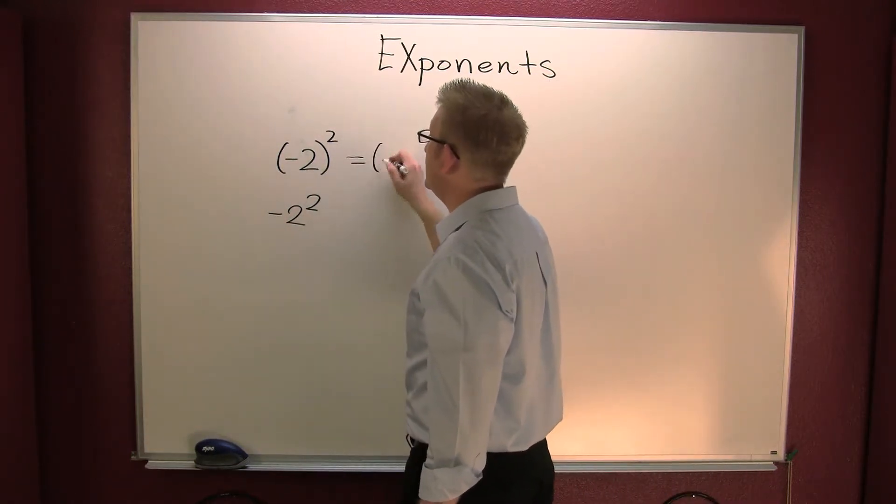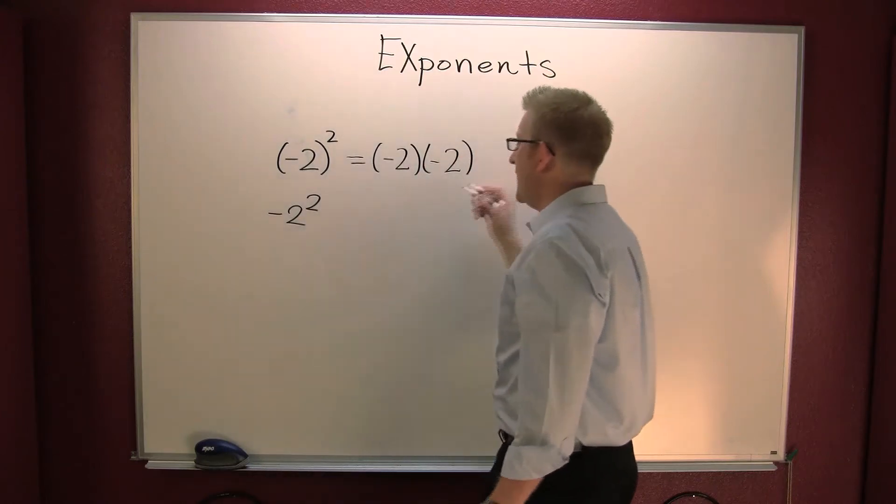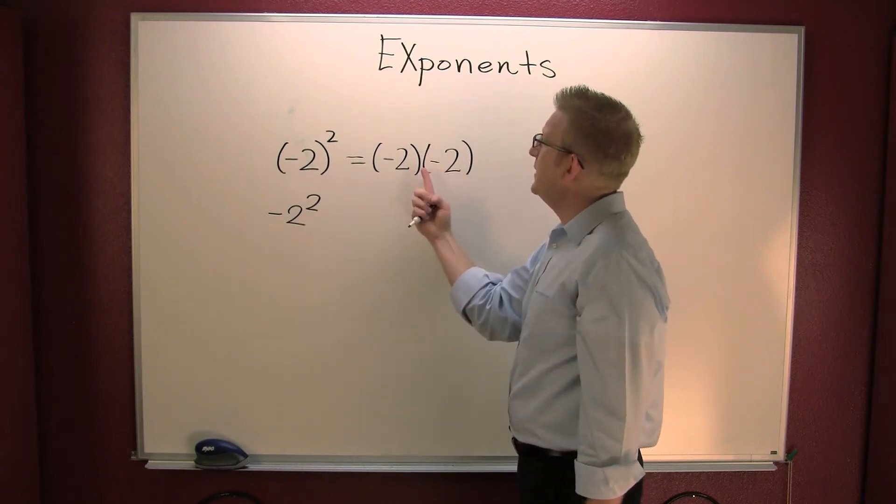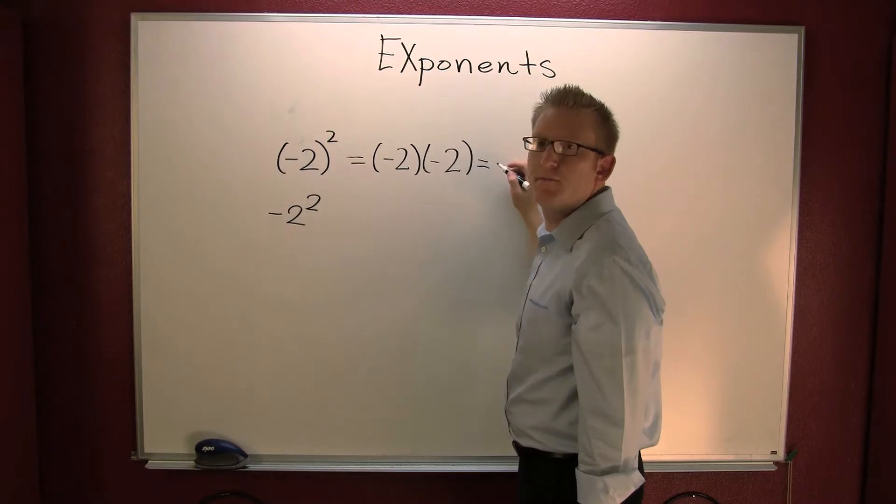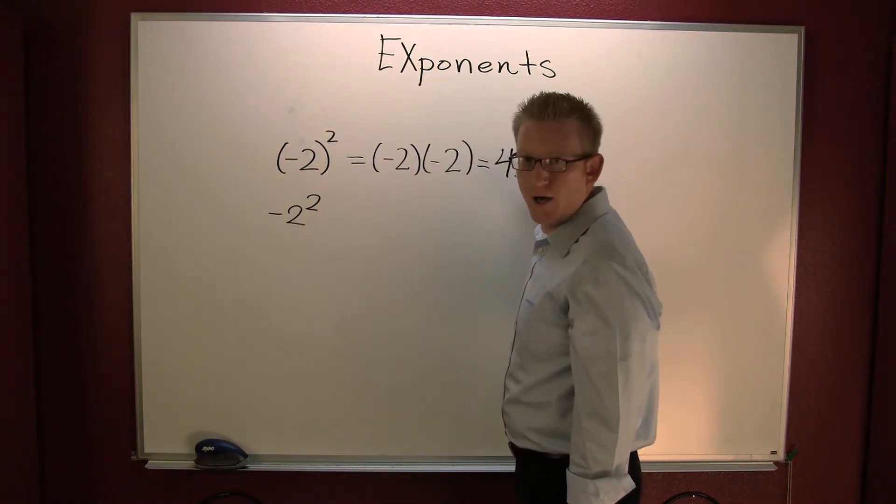This one here is minus two times a minus two. Now you go into your multiplication. They have the same sign, and when you multiply, that product is going to be positive. Are you sure? Positive.